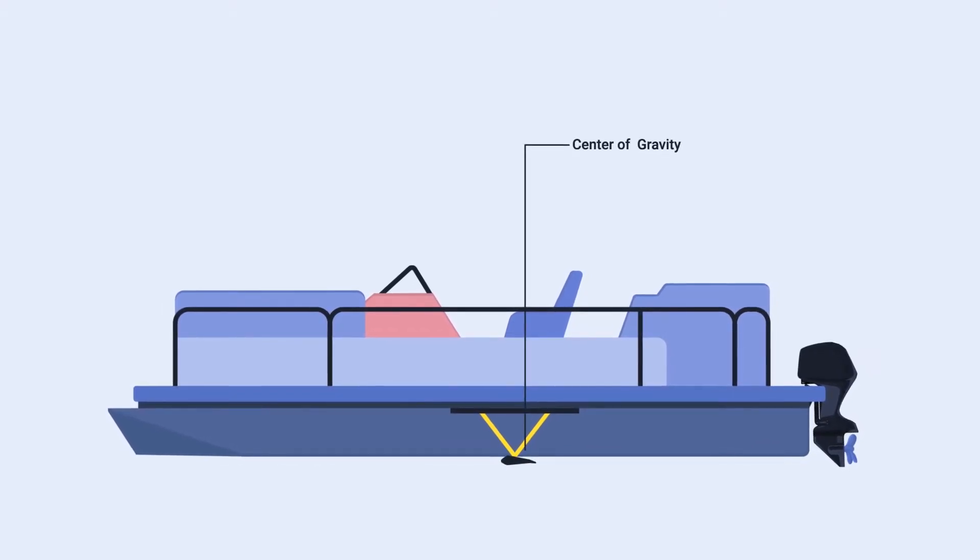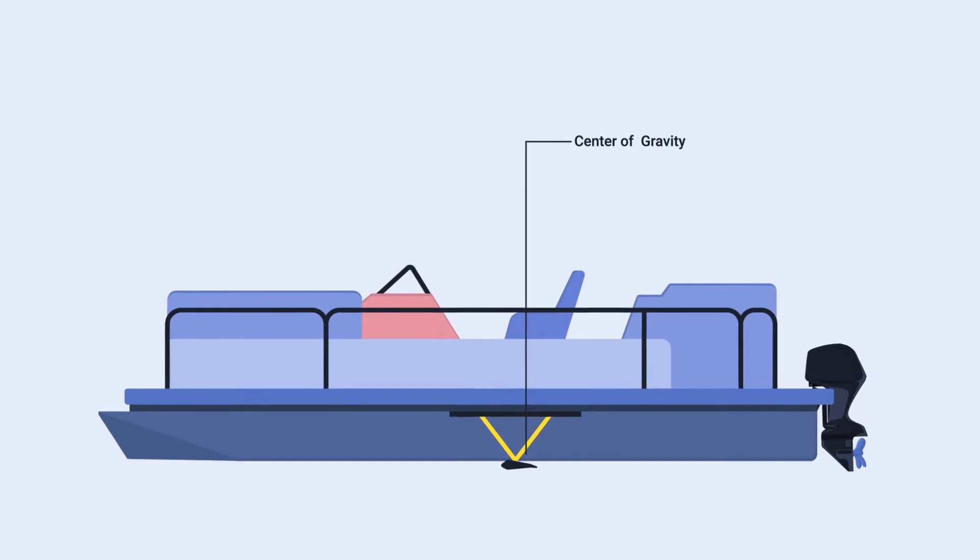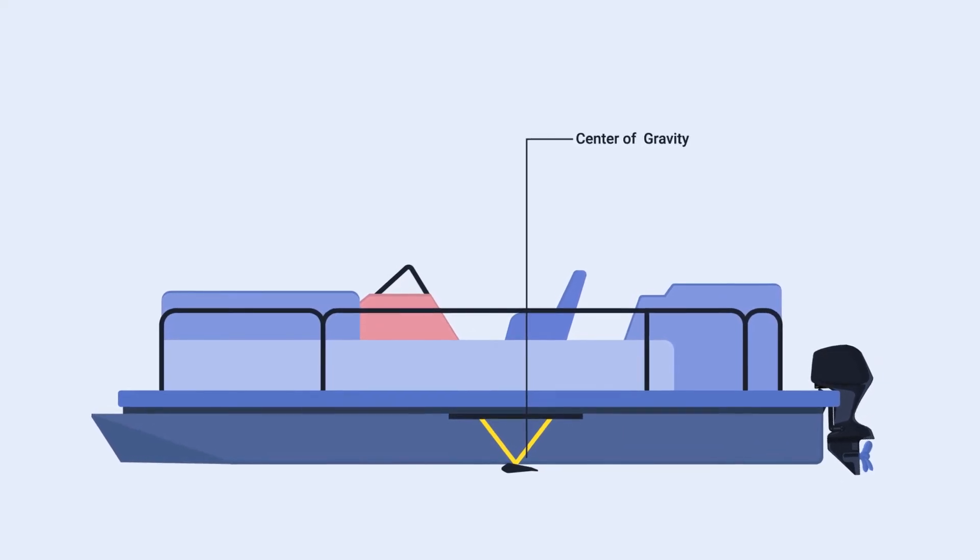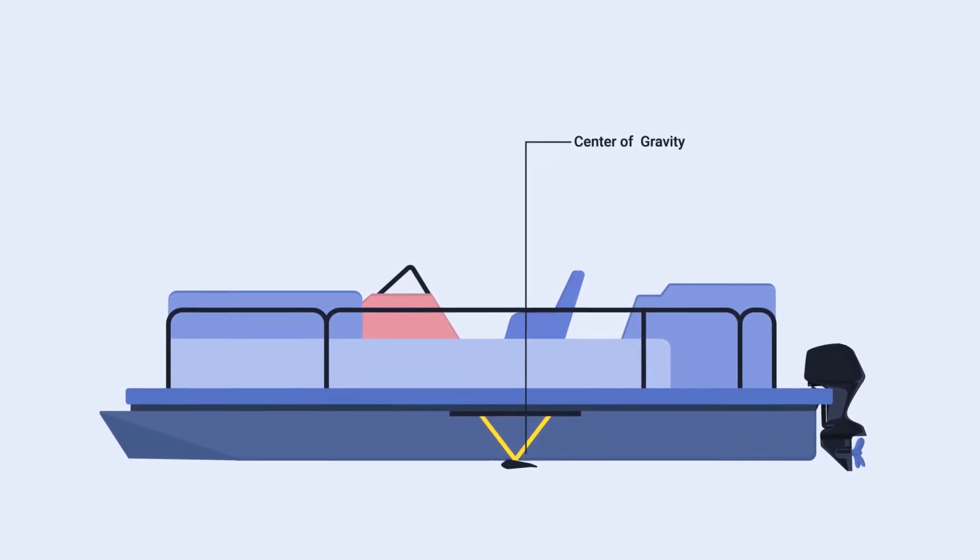There is precisely one point where the thread must be attached, where a pivot could be located to balance the pontoon boat at the center of gravity or CG.